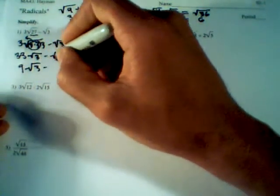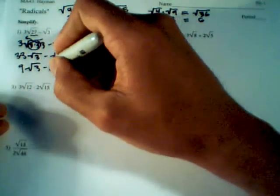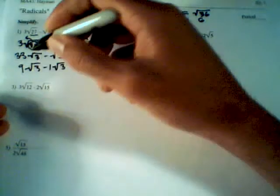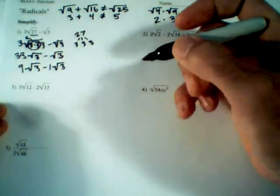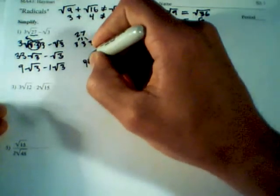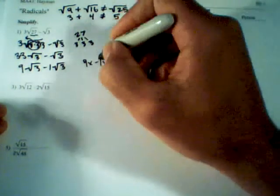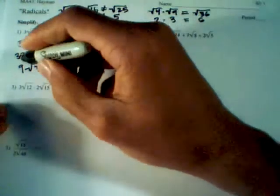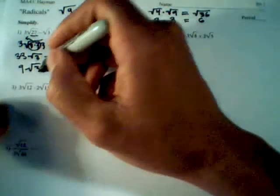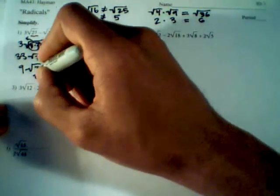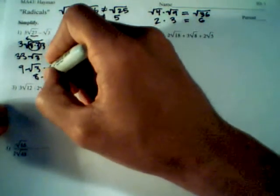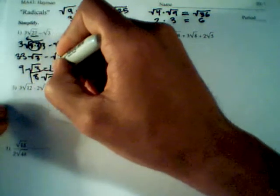We've got 3 times 3, which cleans up to 9 root 3, minus 1 root 3. It's like having 9 of a number minus 1 of that same number — 9x minus 1x is 8x. So 9 root 3 minus 1 root 3 is just 8 root 3. That's our answer for this problem.